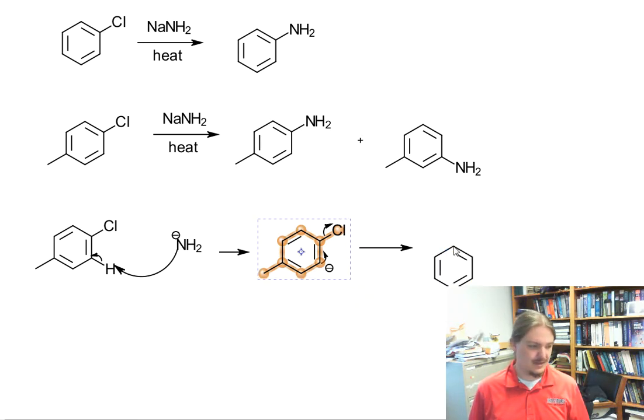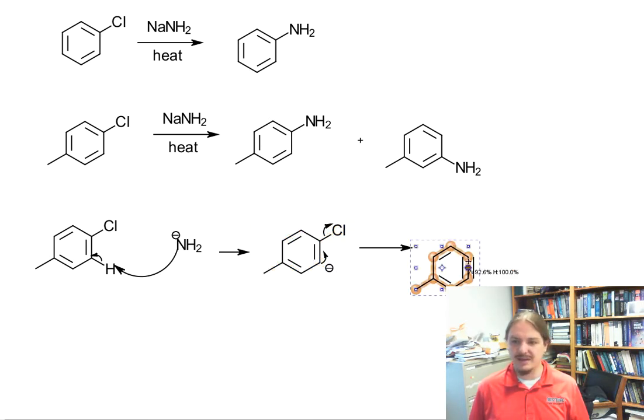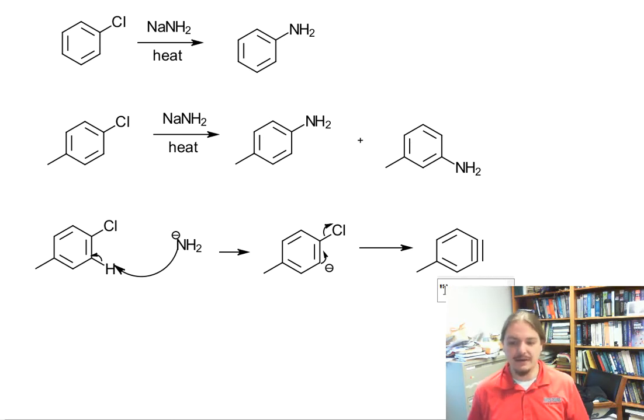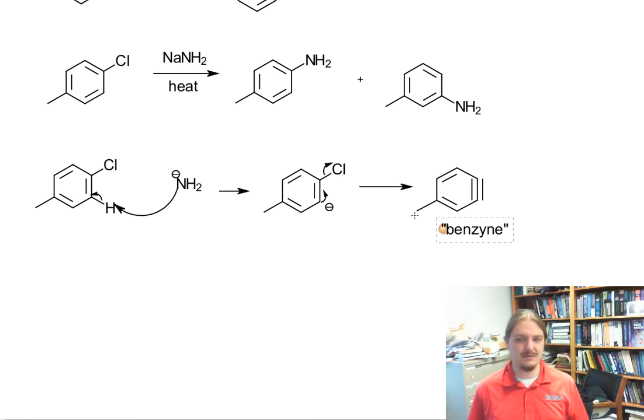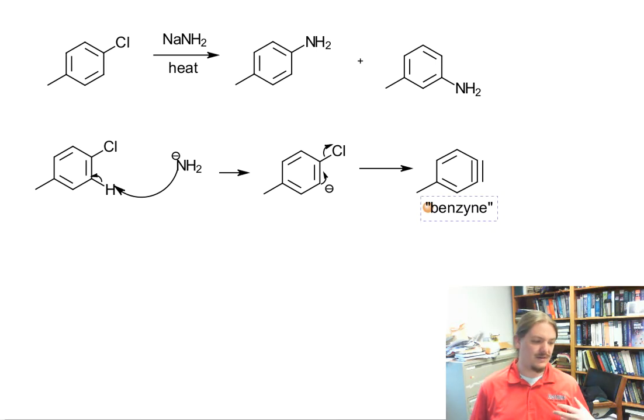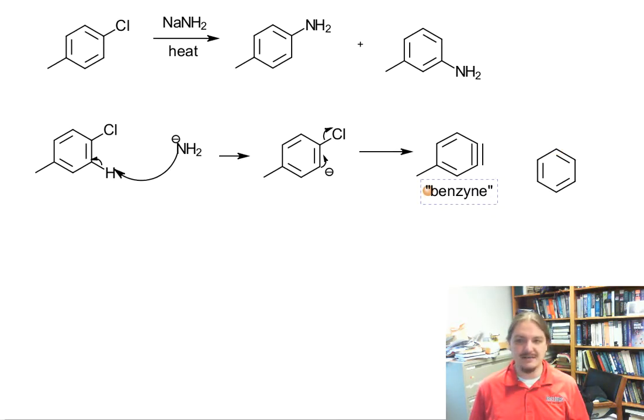And now I'm going to draw benzyne. I want double bond, double bond. The proposed intermediate in this kind of reaction is this benzene with a triple bond in it that folks have named benzyne. And so this mechanism is also called the benzyne mechanism because it involves invoking this benzyne structure. And you might be nervous at this benzyne structure, and I am too. And there's a lot of research out there that suggests that benzyne is not actually a thing itself.